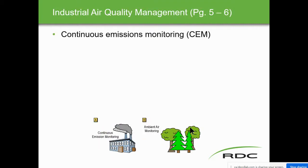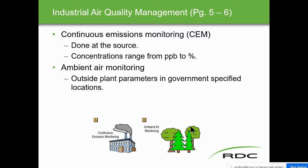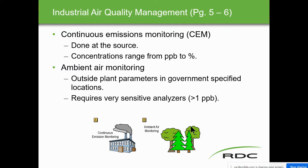Continuous emission monitoring — CEM. You're going to see that all through the book. Because these pollutants happen 24/7, 365 days a year, we have to have continuous monitoring, done at the source. Concentration ranges from parts per billion to percent. Ambient air monitoring is outside plant parameters in government-specified locations. The government will put these analyzers downstream in the prevailing winds, mostly — but wind direction can change, so they're all around the plant. That requires very sensitive analyzers — greater than one part per billion.